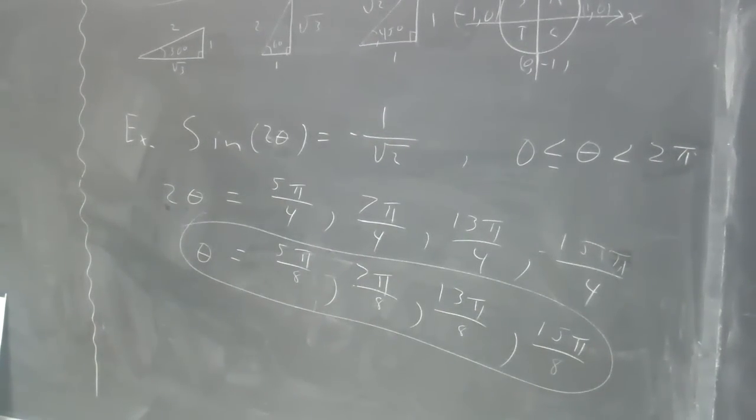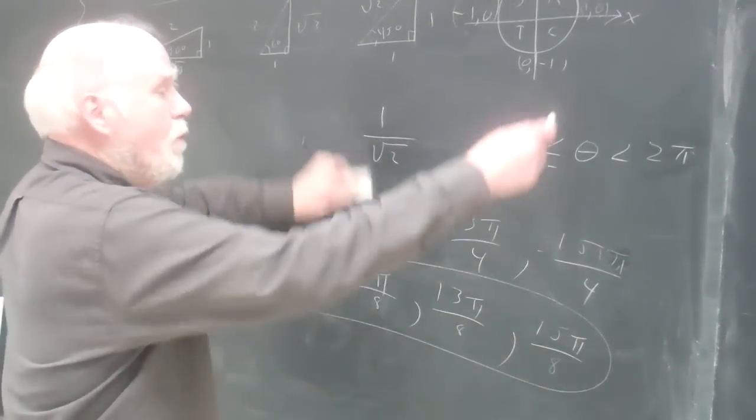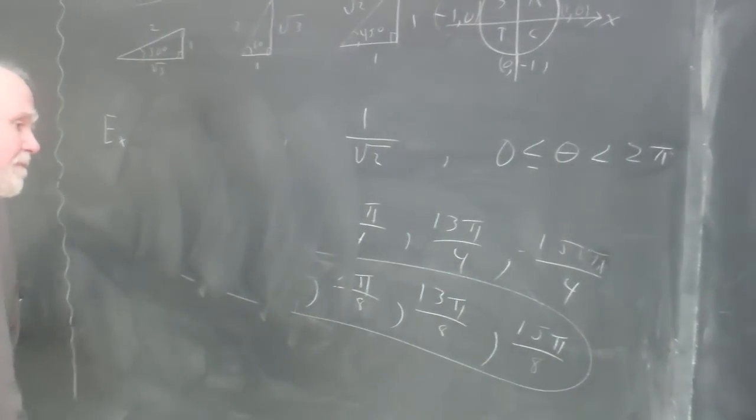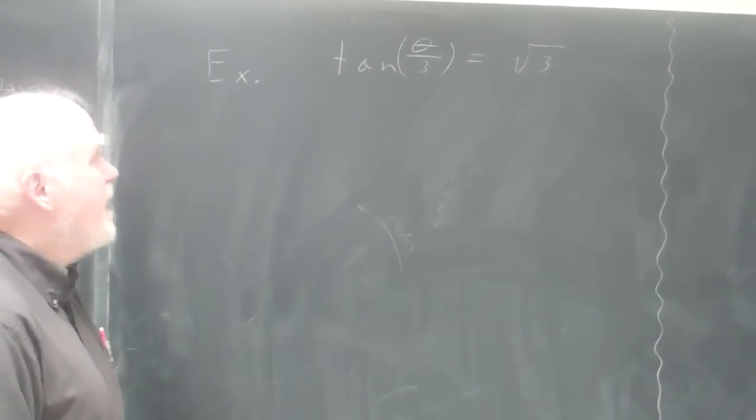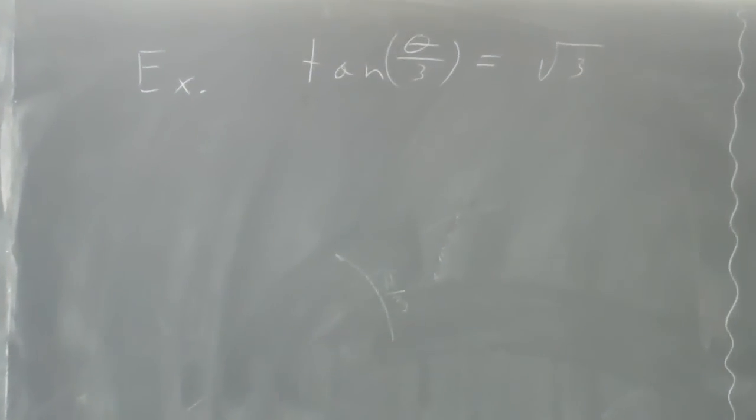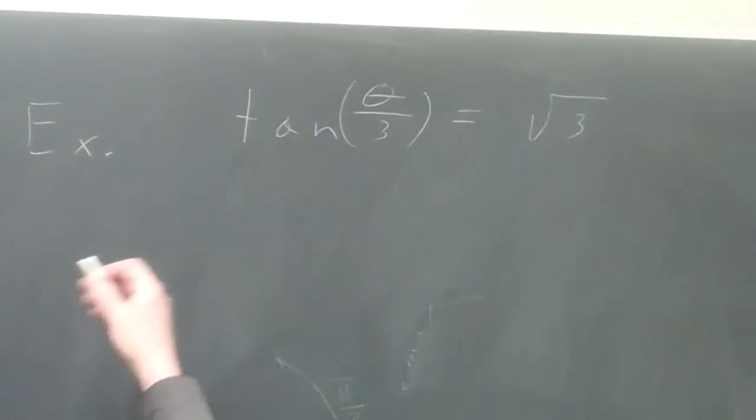The next one I want to do is, let's go over here. The next one I've got up here on the board here. So we're going to look at the tan of theta over 3 equals the square root of 3.